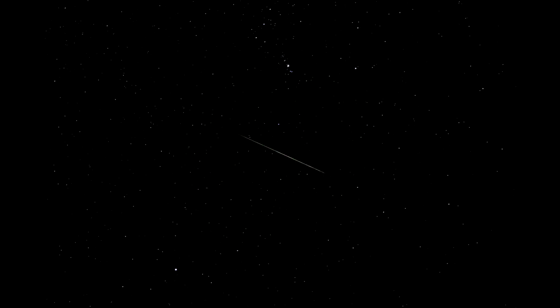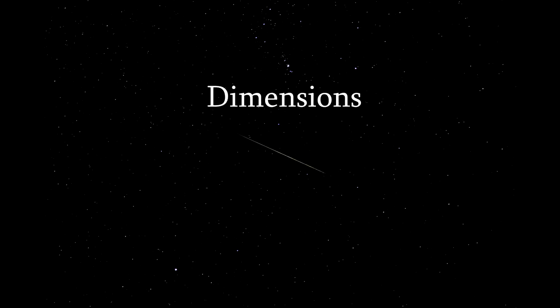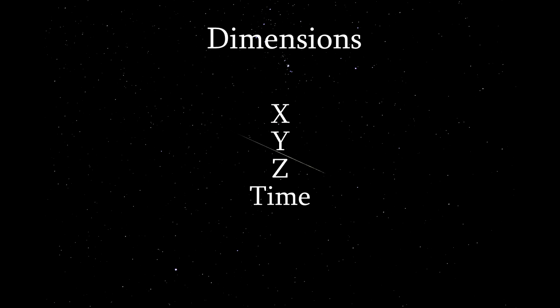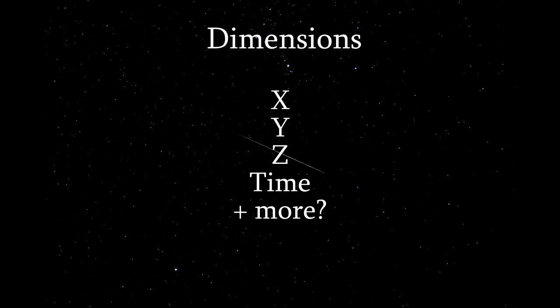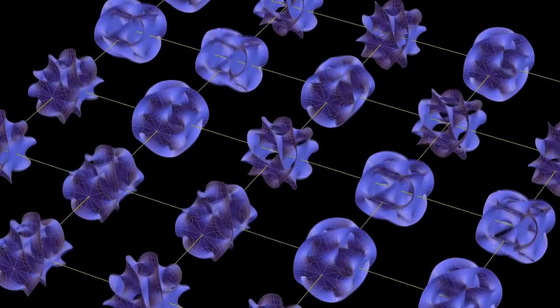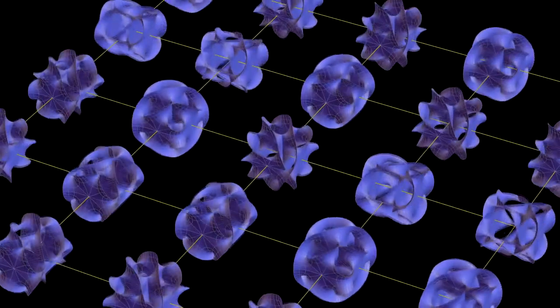For the maths to support various string theories, we need more dimensions. At the moment, we are very happy with our three spatial and one time dimension. But string theorists imagine that there could be many more. Bosonic string theory, for instance, theorises that there are 27 different dimensions to our universe.